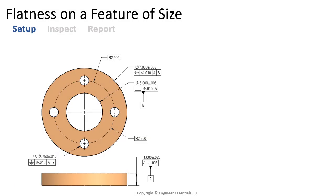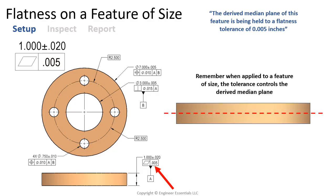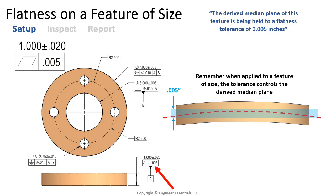There are unique scenarios where we can apply flatness to a feature of size. This flatness callout is applied to the feature of size because it's attached to the size dimension and directly associated with it. This feature control frame is telling us that we're controlling the derived median plane of this feature, held to a flatness tolerance of five thousandths of an inch. When applied to a feature of size, the interpretation changes — the tolerance now controls the derived median plane, which must be held inside a tolerance zone of two parallel planes spaced five thousandths apart.